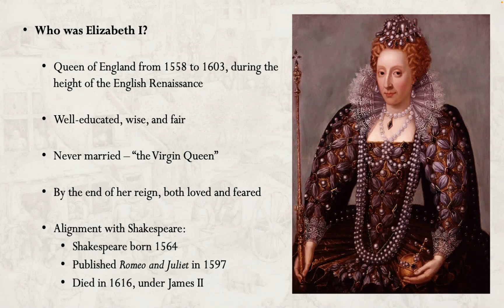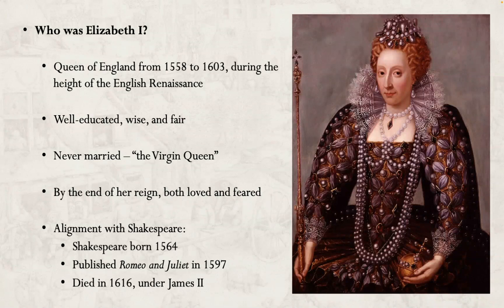I want to clarify the alignment between her life and Shakespeare's life. Shakespeare was born in 1564. Elizabeth I took the throne in 1558, meaning Shakespeare was born just six years later, and most of his life overlaps with the Queen's rule. Romeo and Juliet was published in 1597, near the end of Queen Elizabeth's time on the throne. Shakespeare actually died in 1616, but Queen Elizabeth I died in 1603 — so the later part of Shakespeare's life, during the production of many of his later plays, was under a different king.